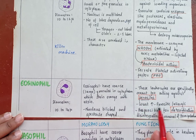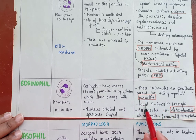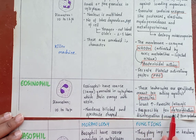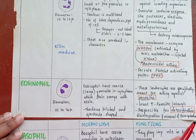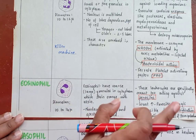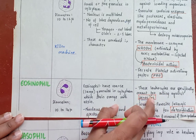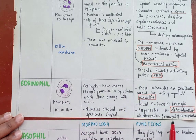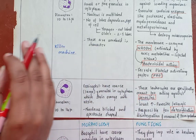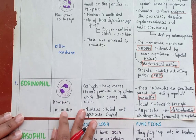Eosinophils are especially meant for acting against parasites. The count increases whenever there is a parasitic or allergic infection or reaction. They are responsible for detoxification, disintegration, and removal of foreign bodies.